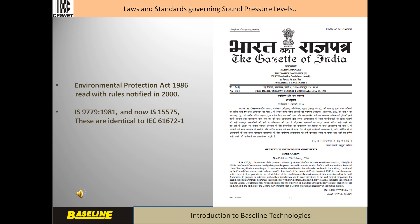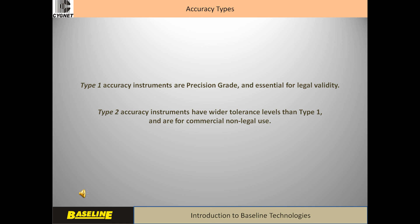The instruments must conform to the Indian standards, typically IS 9779-1981 and now IS 15575. These are equivalent to IEC 616721. The newer standard is slightly more liberal than the older ones in terms of the tolerances permitted. These are accuracy grades defined in the Indian and international standards covering instruments for measurement of sound. Type 1 instruments are also known as precision instruments and type 2 as commercial instruments. In order to be legally valid, an instrument must be type 1 accuracy and it must have a valid calibration which is traceable to standards maintained by the National Physical Laboratory in New Delhi, India.